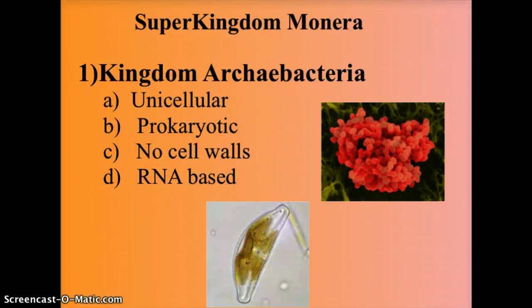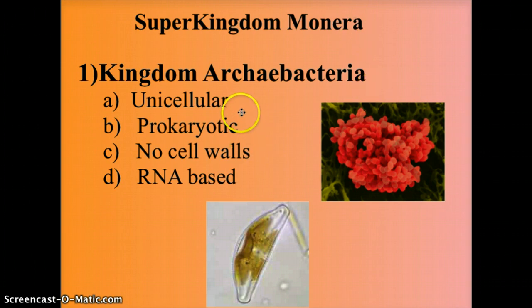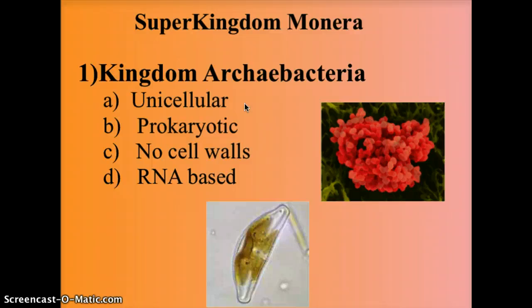Under the super kingdom Monera, the first sub-kingdom is Archaebacteria — also known as ancient bacteria. These are unicellular, single-celled organisms that are prokaryotes, meaning they do not have a membrane surrounding their genetic material and have no typically organized nucleus. They have no cell walls and are based primarily on RNA rather than DNA.